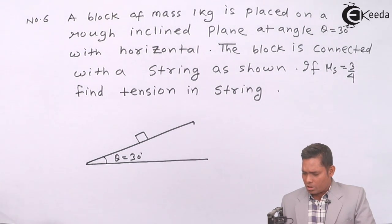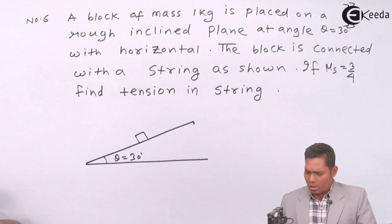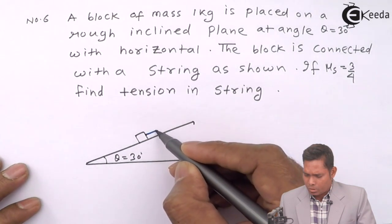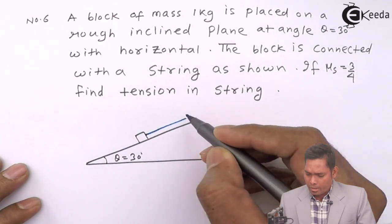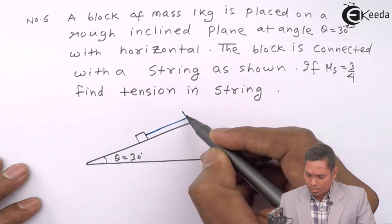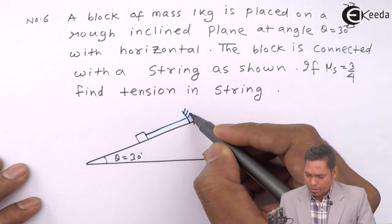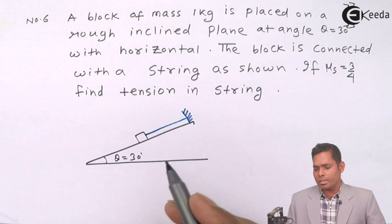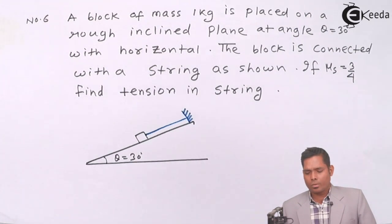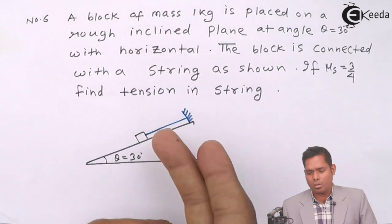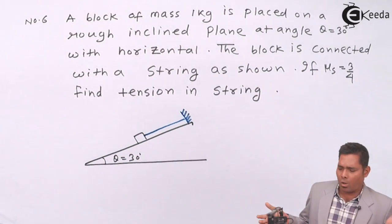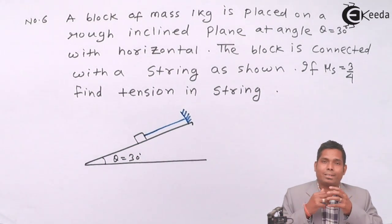I will draw the figure here. This is a string which is connected to this block, placed like that. So this is how the block is connected with the string. If I cut the string, it might fall down, it might slide down, or it may not — depending on the situation that we are going to analyze.